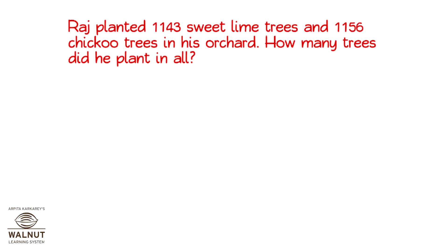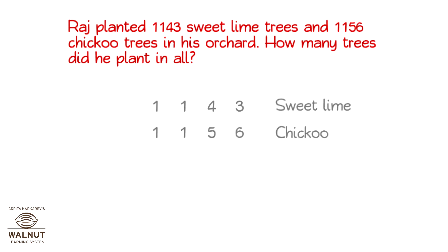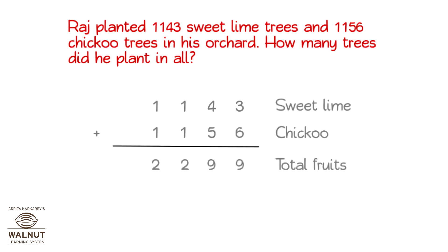We have to find the total trees, which we can get by adding the sweet lime trees and the chiku trees. So, we add the sweet lime and chiku up, and we get the total number of trees. There are 2,299 trees in all.